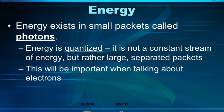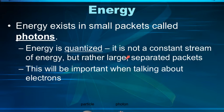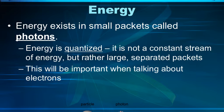Getting back to energy moving in waves — energy also exists in small packets called photons. They're not one continuous stream; they're in small packets called photons. We call that quantized. Energy is quantized — it's not a constant stream, but rather discrete separated packets of energy. This will be important when we talk about electrons. You've got atoms and matter, which are physical things taking up space and having mass, and you've got energy, which moves in waves as quantized photons.